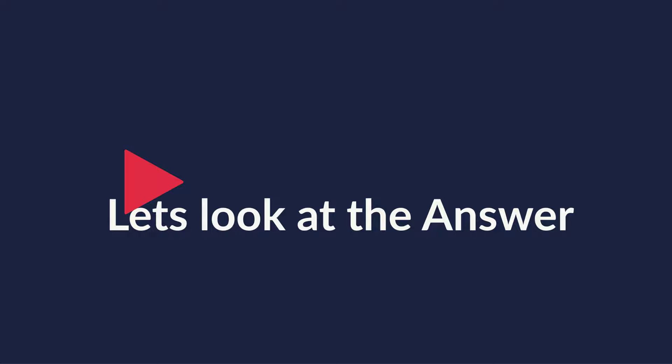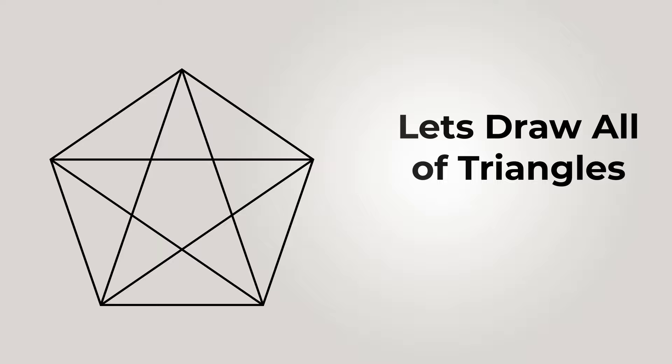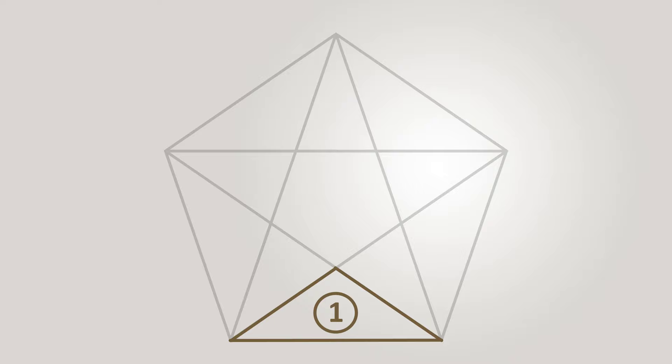Let's continue to get to the correct solution together. It is mind-boggling, but there are 35 triangles here. Let me draw all of them. I'll start by drawing the small border triangles — there are 10 of them. Please count with me: 1, 2, 3, 4, 5, 6, 7, 8, 9, and 10.